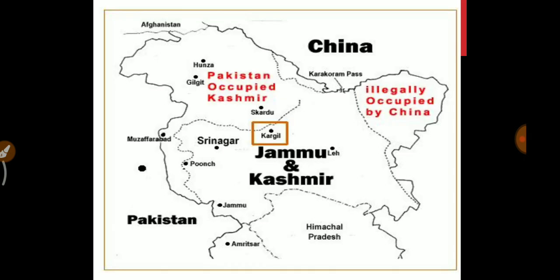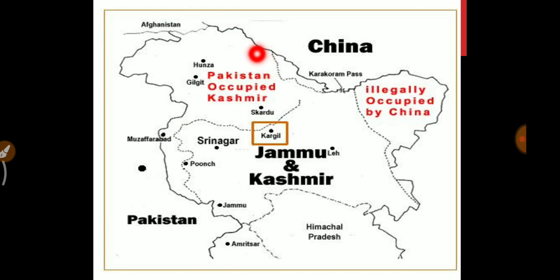On the official map of the Indian government, you can see that the part to the east of J&K is illegally occupied by China. There is a Karakoram Pass here. The portion to the west of J&K is Pakistan-occupied Kashmir, which Pakistan occupied in 1947. You can also see Kargil, the Ladakh portion, and Jammu.